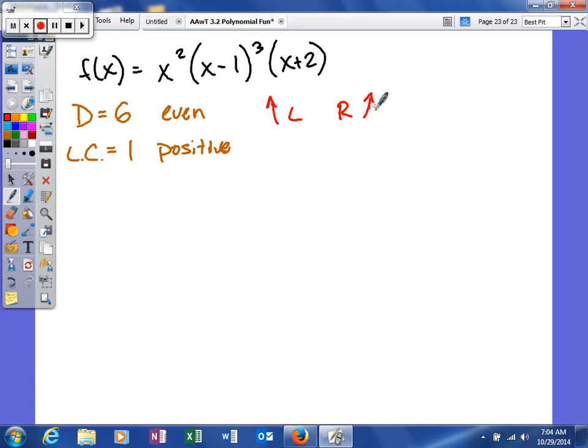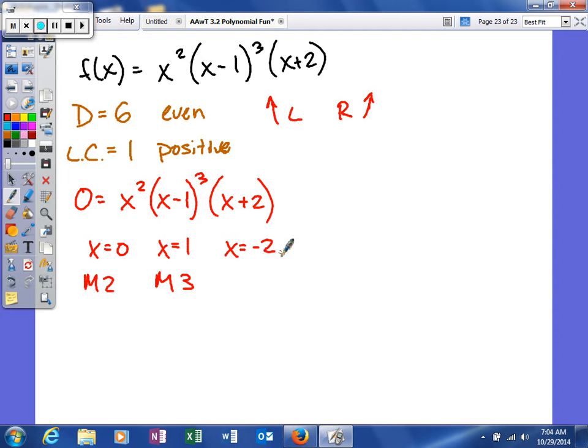Now what we can do is figure out what our zeros are. Zeros are a little bit easier when it's in factored form like this because we don't really have to do anything. We just have to set them equal to 0. When you set x squared equal to 0, you're going to get 0 with a multiplicity of 2. When you set this equal to 0, you get 1 with a multiplicity of 3 because of the exponent. And this will give us a 0 of negative 2. So we're going to get six zeros in total.